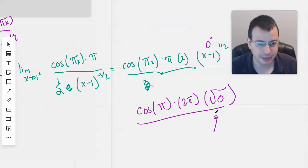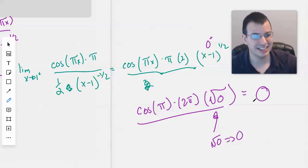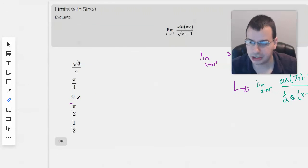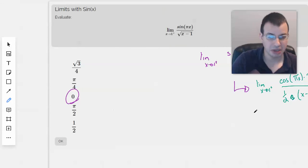So if we plug in 1, we have cosine of pi times 2 pi times square root of 0. This gives us, the one that dominates here is square root of 0, which is 0. And so this whole thing will be 0. Gone. Nothing. Not there. And that's a possible answer.